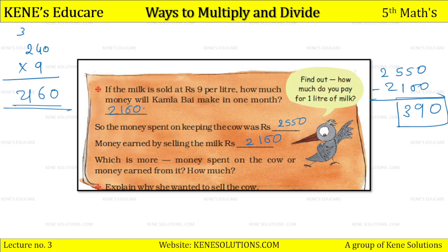This explains why she wanted to sell the cow — because she had to spend more money on the cow compared to what she was earning. The earning from selling milk is comparatively less than what is spent. Since she is spending more and earning less, that is why she wanted to sell the cow.